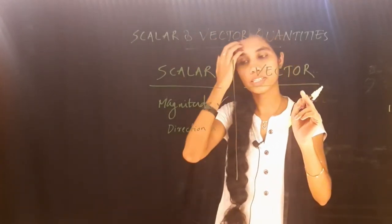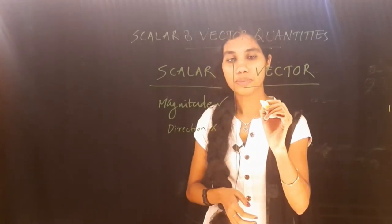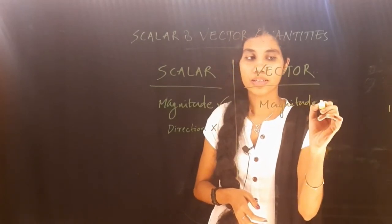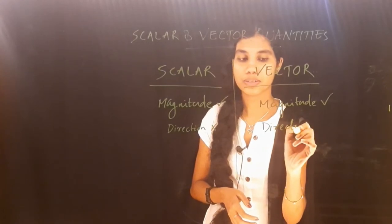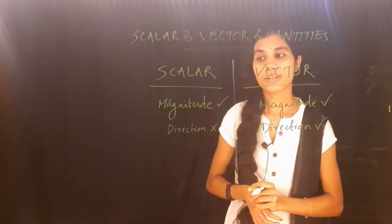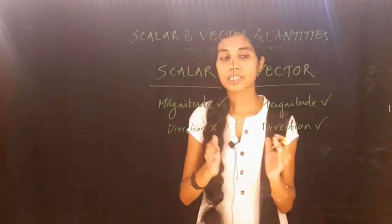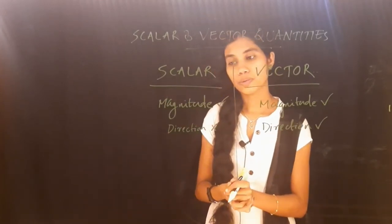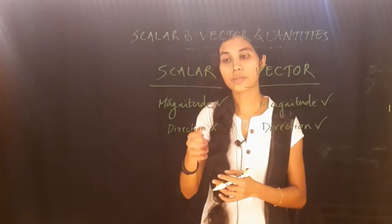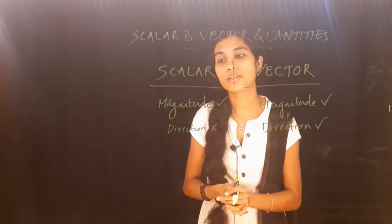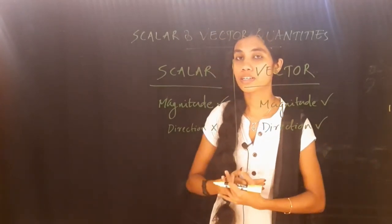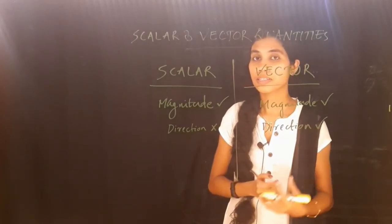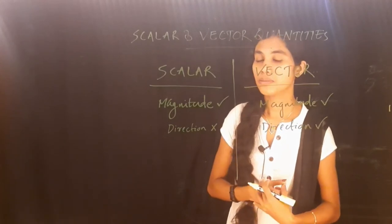Vector quantities have both magnitude and direction. When both magnitude and direction are mentioned, these are called vector quantities. The difference between scalar and vector quantities is: scalar quantities have magnitude only, while vector quantities require both magnitude and direction.